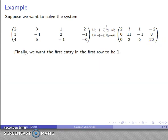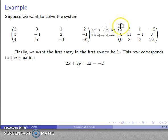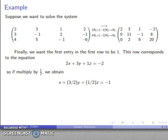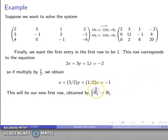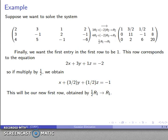We also want the first entry in the first row to be 1, to get into row echelon form. The first row corresponds to 2x plus 3y plus z equals negative 2. To make the coefficient of x equal to 1, I multiply through by one-half, giving the new equation: 1x, three-halves y, one-half z equals negative 1. I store this as the new first row. The row operation is: (1/2)r1 → r1. There are my three row operations producing the new matrix.